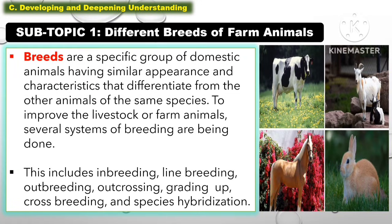Breeds are a specific group of domestic animals having similar appearance and characteristics that differentiate from other animals of the same species. To improve the livestock or farm animals, several systems of breeding are being done. This includes inbreeding, line breeding, outbreeding, outcrossing, grading up, crossbreeding, and species hybridization.